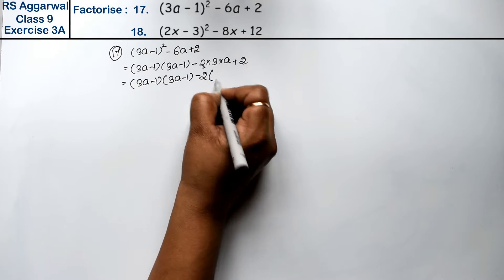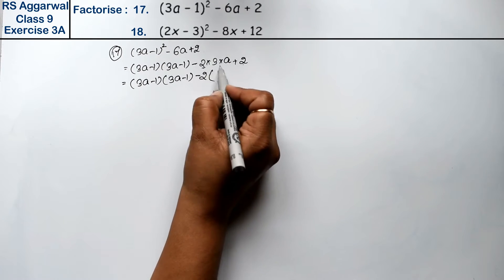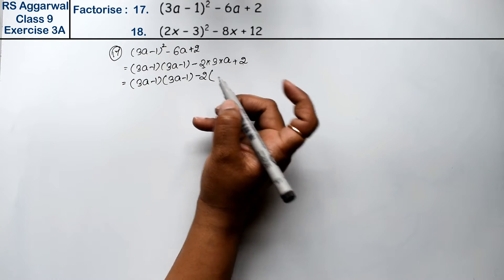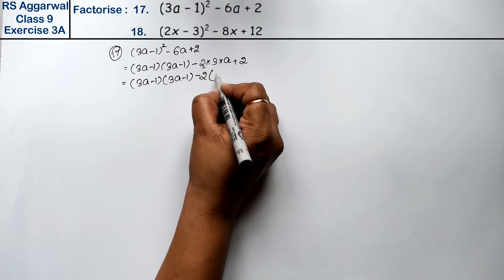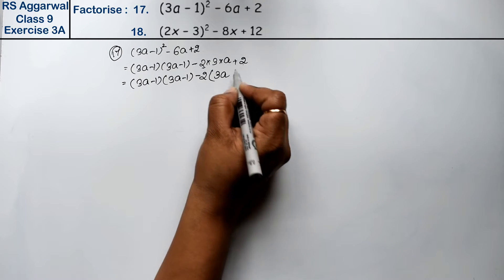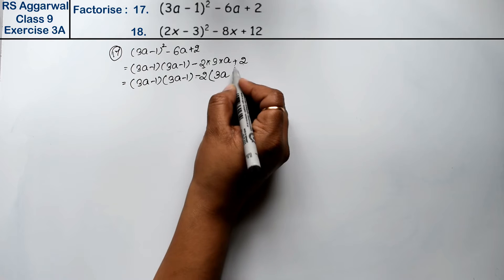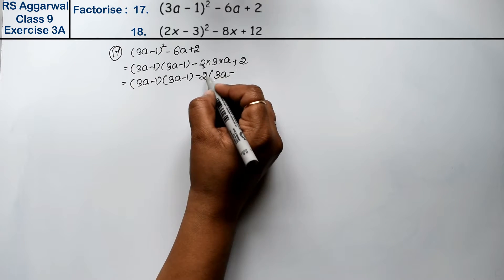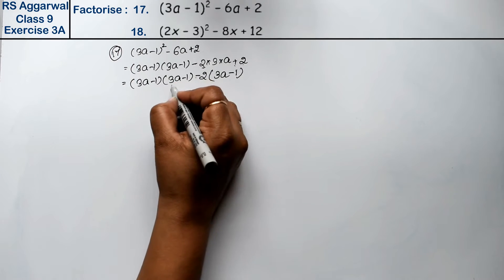Why did we take minus? Because we need 3a to be plus. How will 3a become plus? When we take minus outside, then inside 3a becomes plus. When minus is taken outside, the inside sign changes - plus becomes minus. Now if we take 2 out as common, one remains inside.